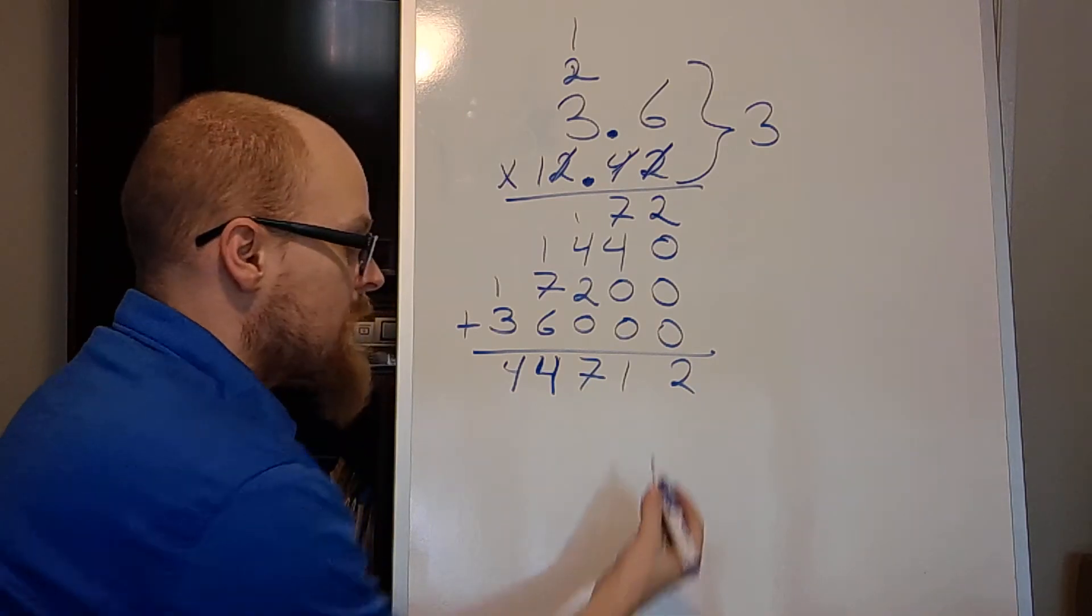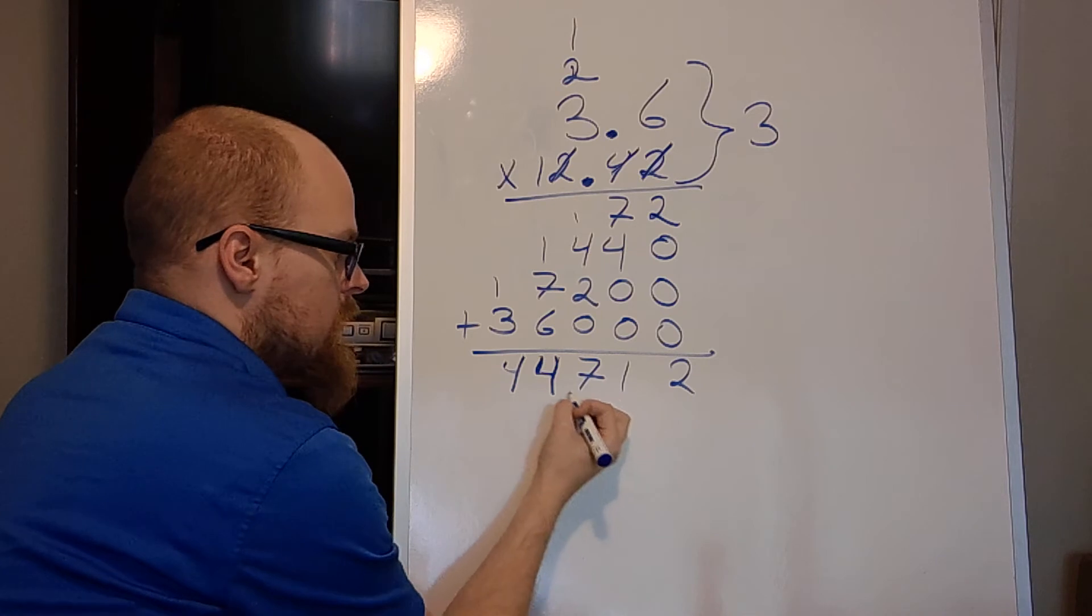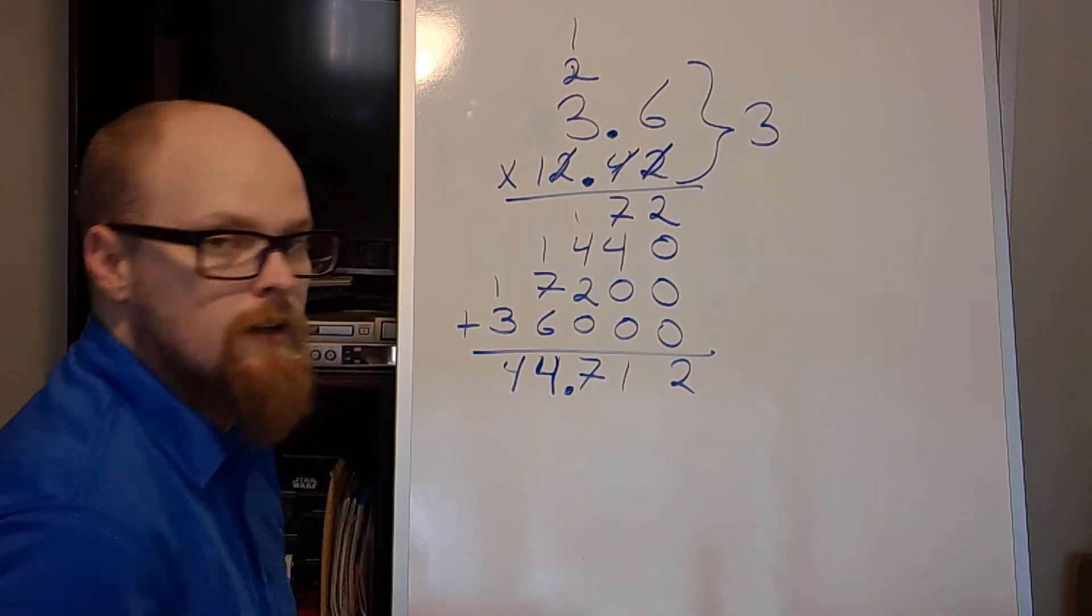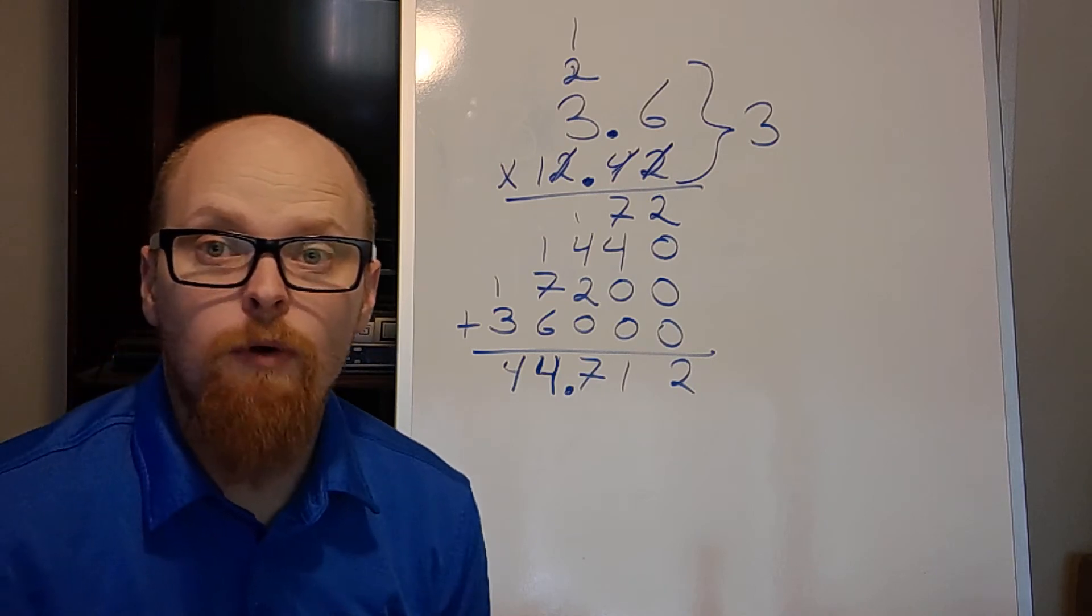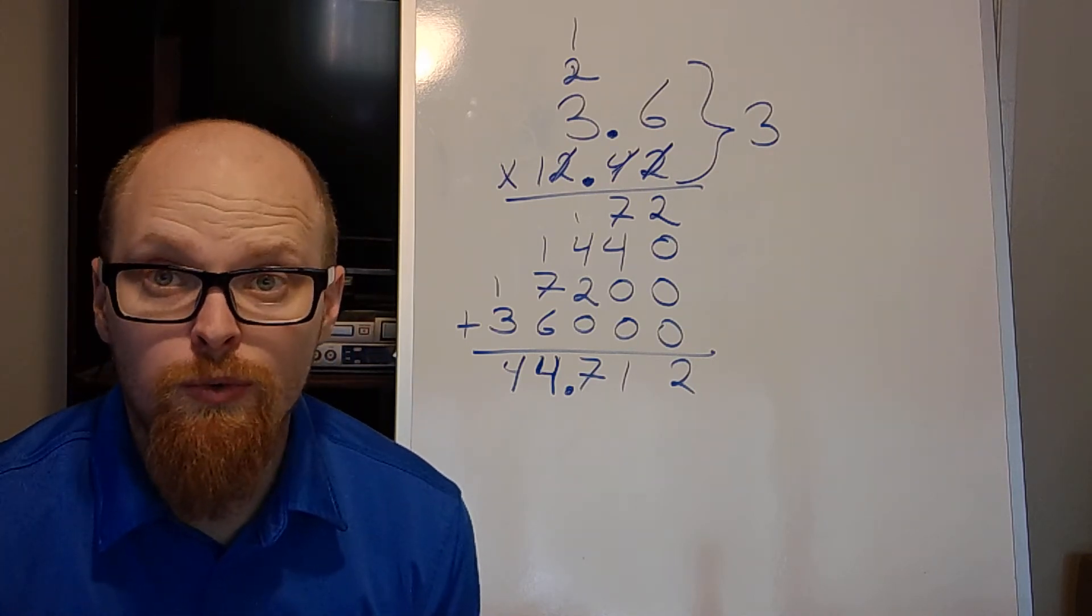So what I do with that is I count down here on my answer. Start at the end and go 1, 2, 3. It goes right in between 4 and 7. So my answer is 44.712.